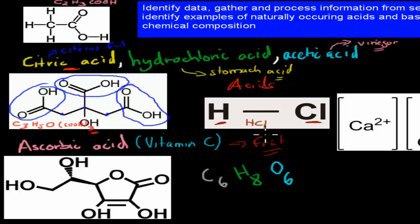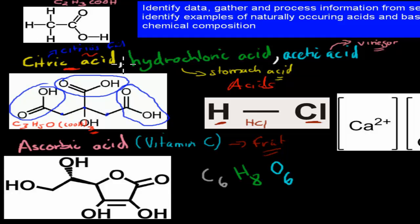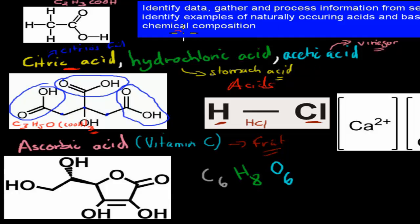What I would recommend for the acids: remember the names — citric acid, hydrochloric acid, acetic acid, ascorbic acid. Also remember where they're naturally found and why they're naturally occurring: citric acid in citrus fruit, hydrochloric acid in stomach acid, acetic acid in vinegar, and ascorbic acid in fruit. Remember the chemical formulas too, because the dot point says you need to know the chemical composition as well.